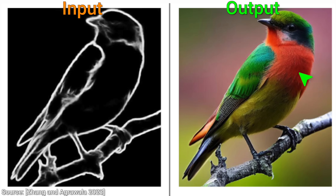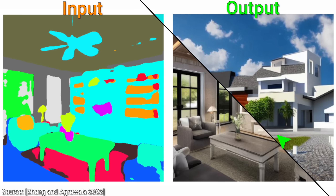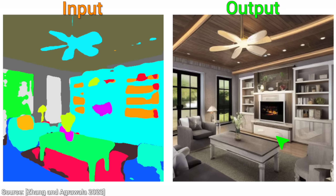Segmentation maps also work. This is just a rough draft of where the object should be, and out comes a beautiful piece of landscape and architecture, or even an interior. Just look at that — all this came from these really coarse, poor images.